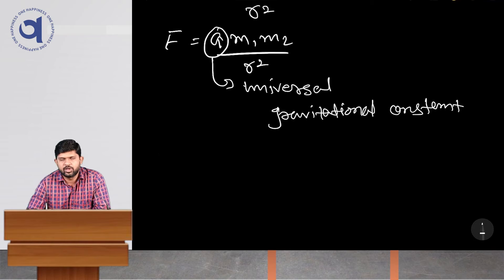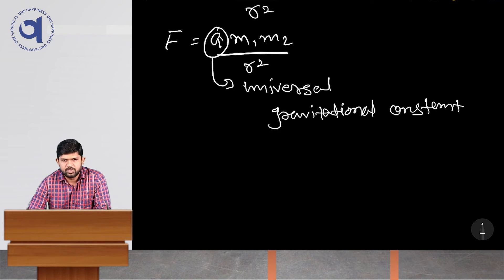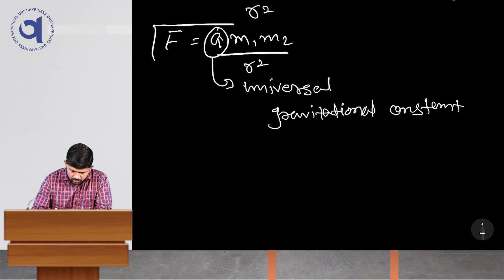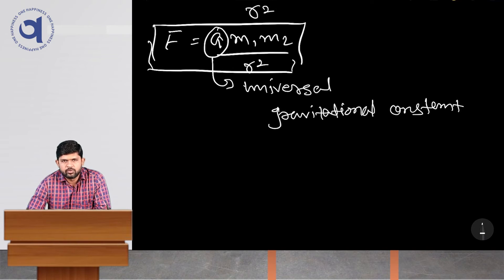There is also a method to find the value of G. That method was performed by the scientist Cavendish, and he found a very accurate value of this gravitational constant G. We will see that value later. So this equation — F equals G M1 M2 by R squared — is called the Universal Law of Gravitation.